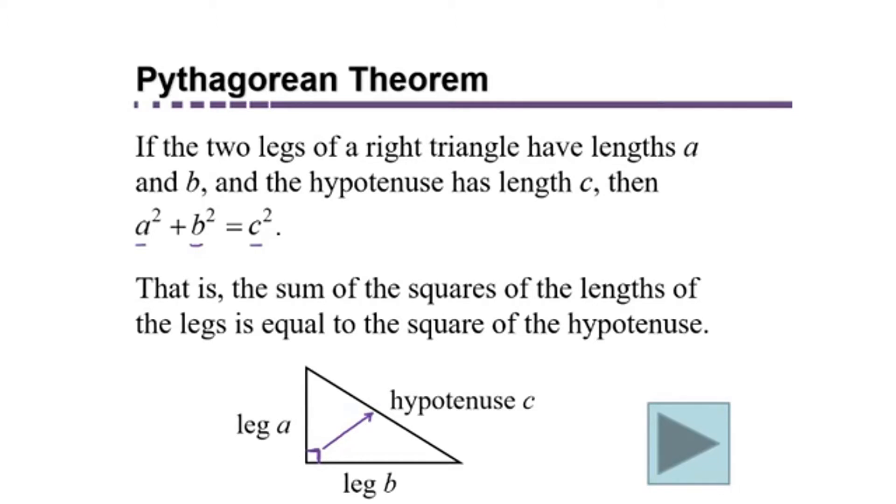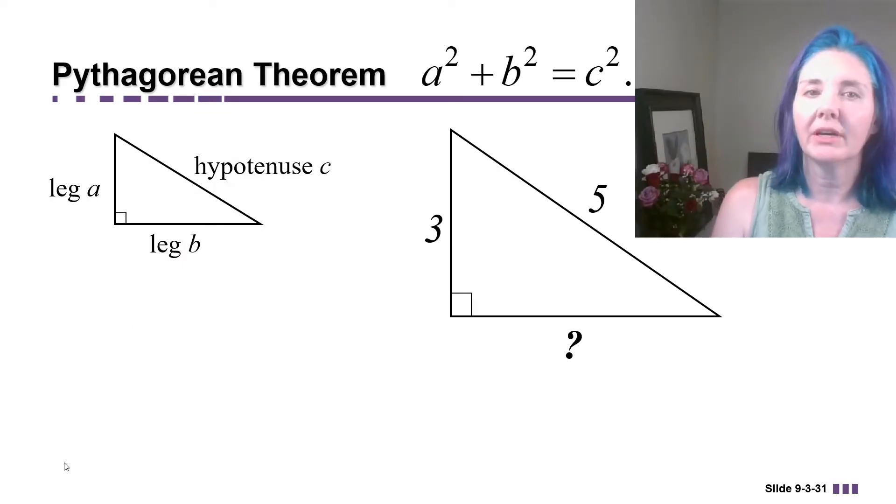In other words, a squared plus b squared equals c squared. So anytime you have a situation where you're given a right triangle, and you know two of the sides, and you're looking for the third side, you can apply the Pythagorean Theorem.